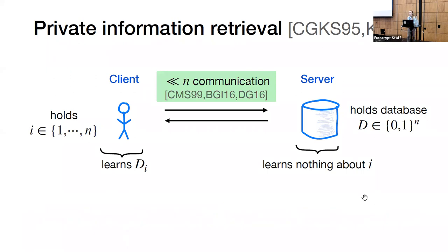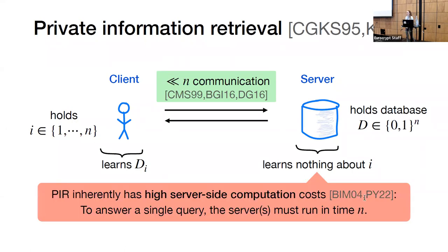There has been lots of work on making PIR as practical a primitive as possible. We know how to build PIR protocols with relatively small communication costs, and specifically in the single server setting, we know how to build protocols with communication polylog in the database size. Unfortunately, PIR requires high server-side computation costs. Bi-Molishai and Malkin proved a lower bound showing that to answer even a single PIR query, the PIR server must run in time linear in the database size.